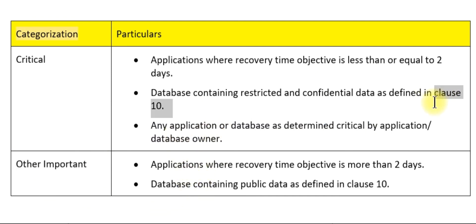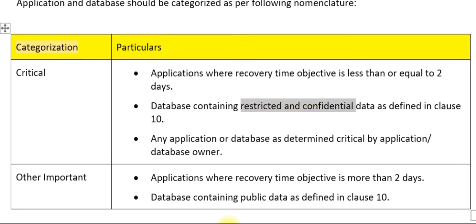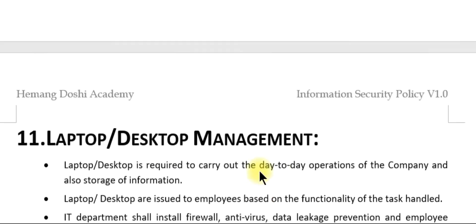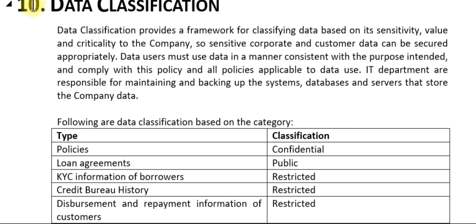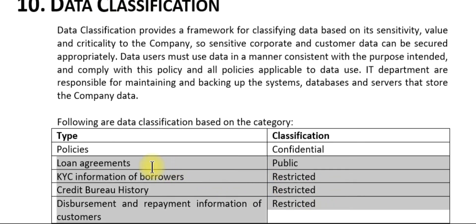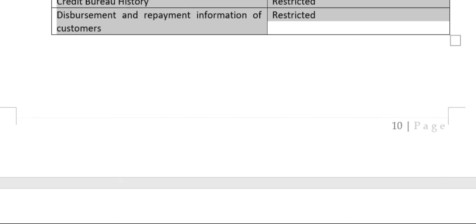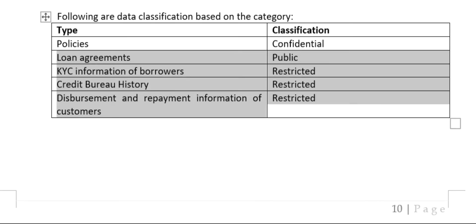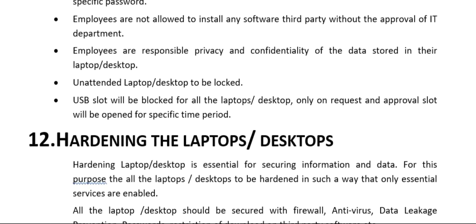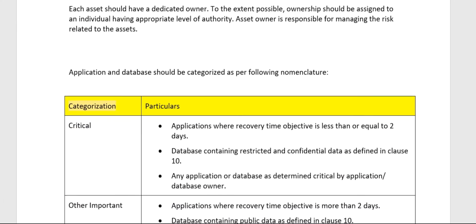Now let us check what is Clause 10 — we need to check restricted and confidential data. This is Clause 10 data classification. All listed data types should be part of restricted, and all other data will become part of other important databases.